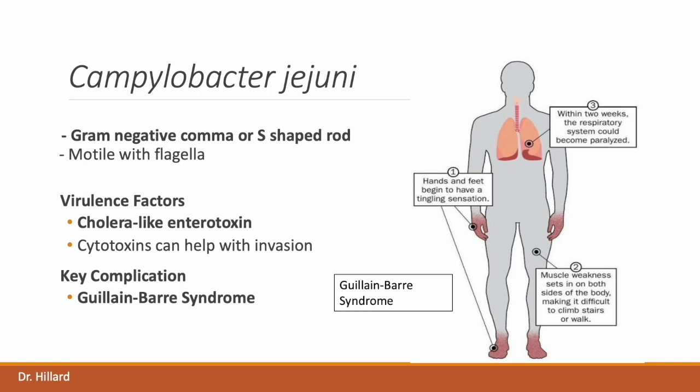The key complication associated with Campylobacter jejuni is Guillain-Barré syndrome, although like many enteric bacteria it is also associated with reactive arthritis, or Reiter's syndrome. Guillain-Barré syndrome is an immune-mediated, progressive, symmetric, ascending neuropathy which results in marked muscle weakness and paralysis.